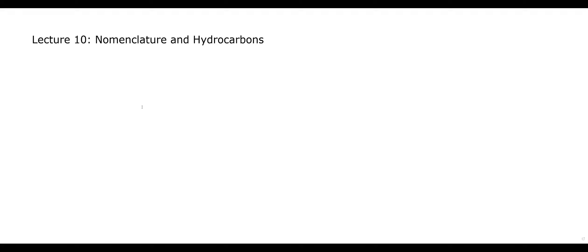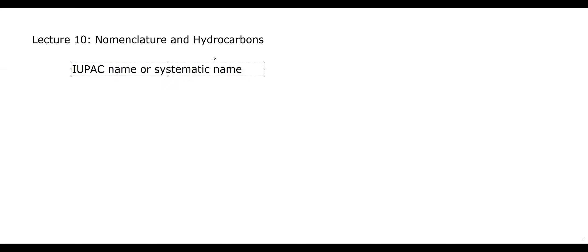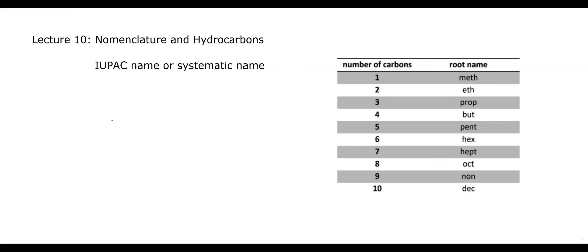Today we'll take a little time to understand the basics of nomenclature. You'll often see the term IUPAC name or systematic name — that's your standard chemical name given based on structure. There are also common names; for example, sodium hydroxide can be called lye, and acetic acid is vinegar — a dilute solution of acetic acid. Today we'll focus on IUPAC or systematic names.